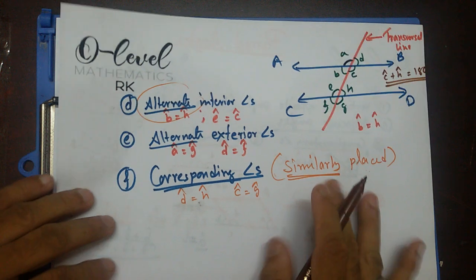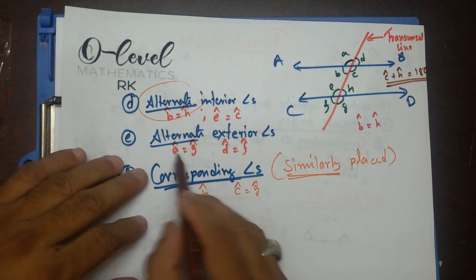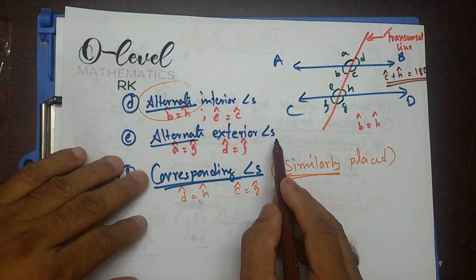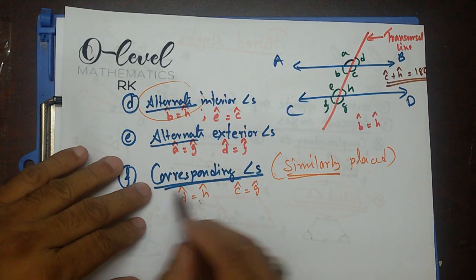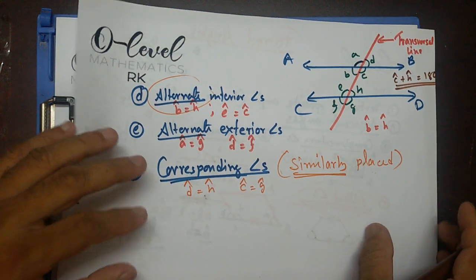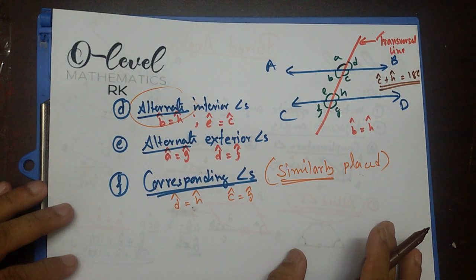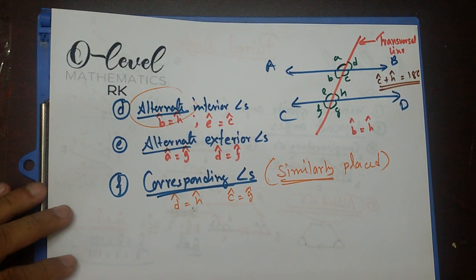And then I have alternate interior angles, alternate exterior angles, and corresponding angles. I hope that will help you for your geometry. If you have any question, leave it in the comment box and I'll get back to you. Thank you, have a good day.